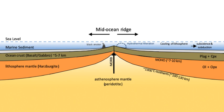The mid-ocean ridges of the world are connected and form the ocean ridge—a single global mid-oceanic ridge system that is part of every ocean, making it the longest mountain range in the world. The continuous mountain range is 65,000 km long, several times longer than the Andes, the longest continental mountain range, and the total length of the oceanic ridge system is 80,000 km long.